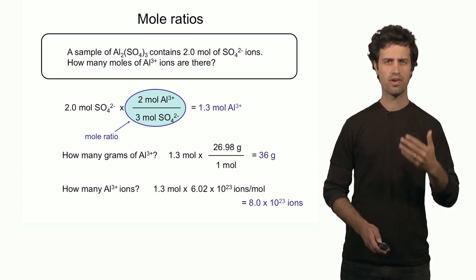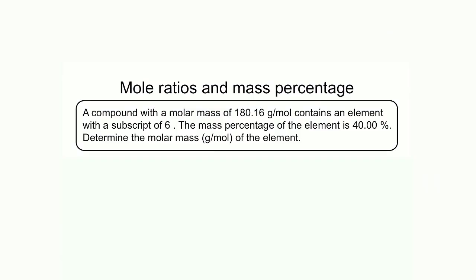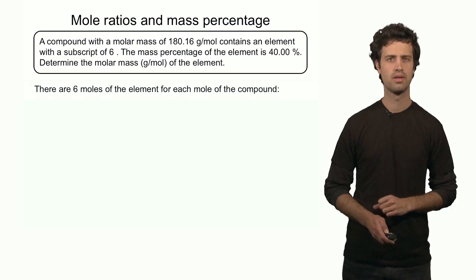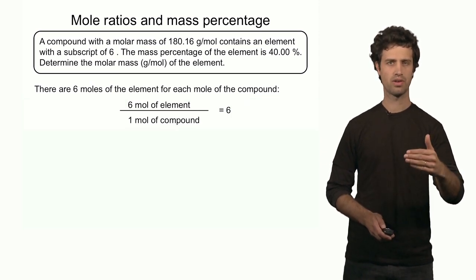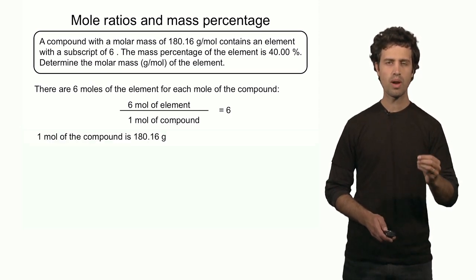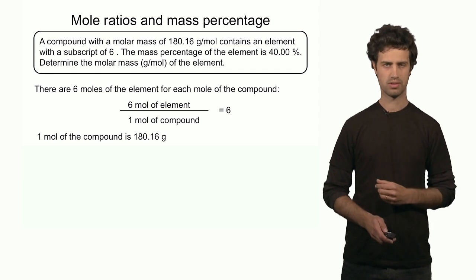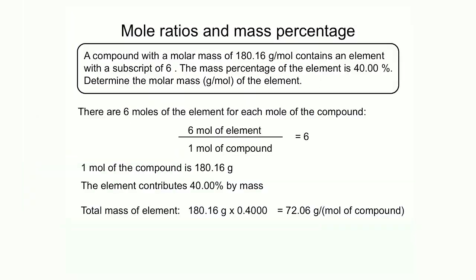The mole ratio is a very important tool in chemistry calculations. In this example, we'll use the mole ratio in a mass percentage calculation. Here I have a sample with a molar mass of 180.16 grams per mole. It contains an unknown element, and in the molecular formula that unknown element has a subscript 6. It's also given that this element contributes 40% to the total mass. Can you determine the molar mass of this unknown element? A subscript of 6 implies that there are 6 moles of this element for each 1 mole of the compound — the mole ratio of the element over the compound is 6 to 1. One mole of the compound contributes 180.16 grams. The element contributes 40% of that, which means 180.16 grams times 0.40 equals 72.06 grams per mole of the compound.